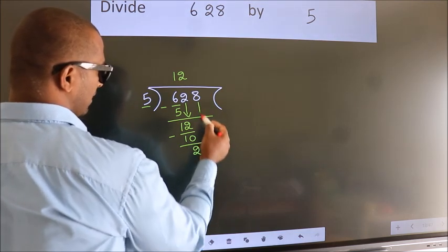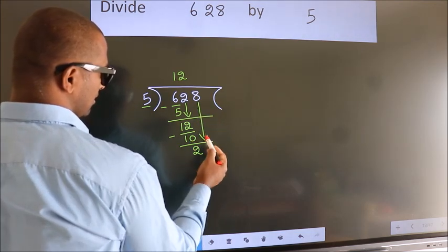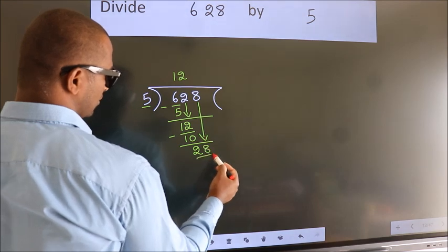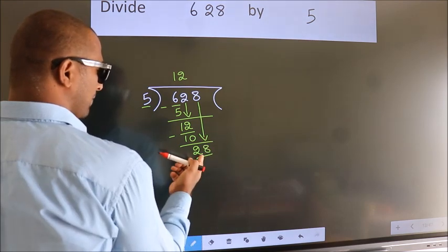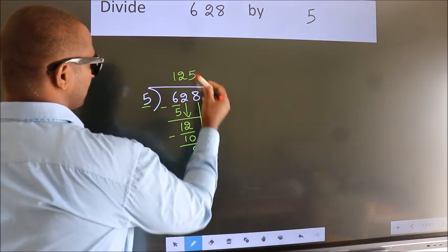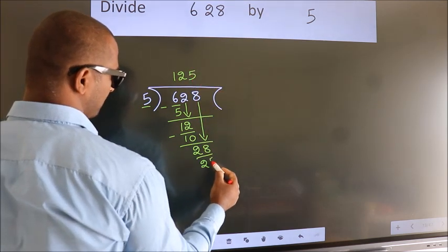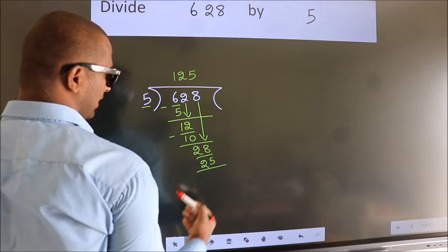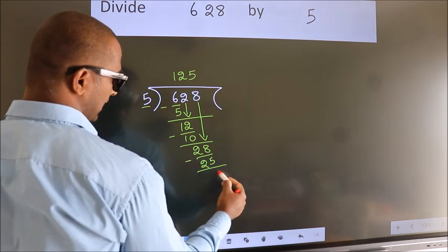After this, bring down the beside number. So, 8 down. So, 28. A number close to 28 in 5 table is 5 5s 25. Now, we subtract. We get 3.